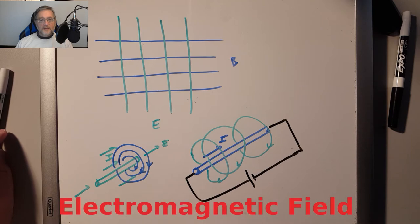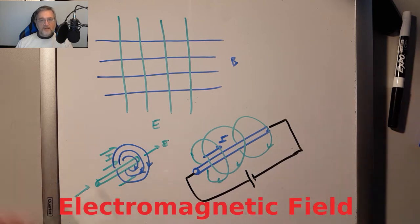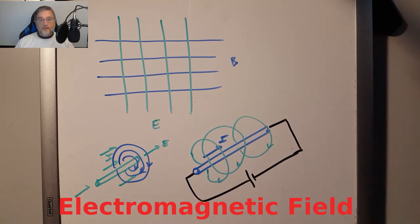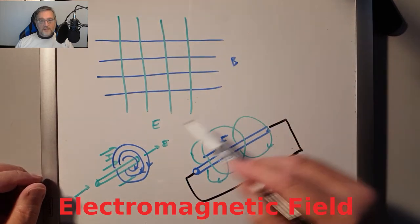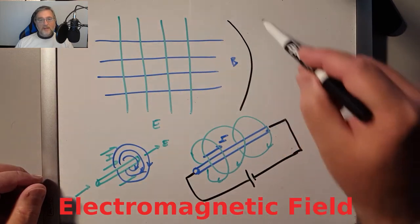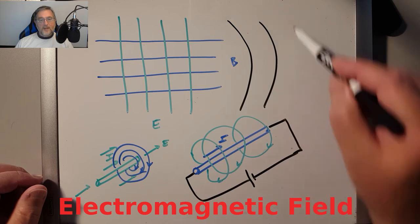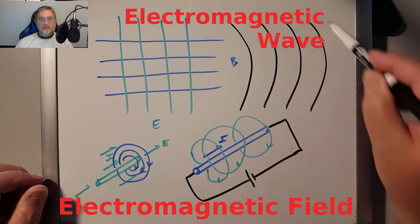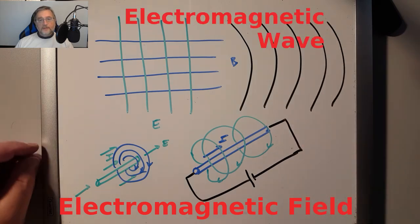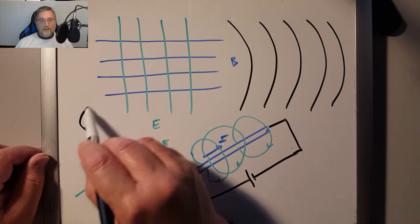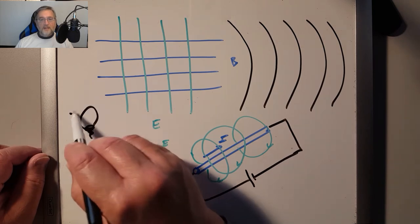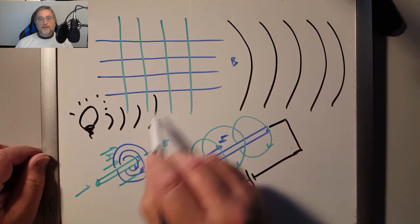Because the electromagnetic field changes over time, it also affects its surrounding space, and the spaces surrounding that space, and so forth. Basically, the effects of the electromagnetic field are visible over long distances, and so we say that electromagnetic fields propagate in space. We call this an electromagnetic wave. Light, for example, is an electromagnetic wave, and propagates in space at what we call the speed of light.